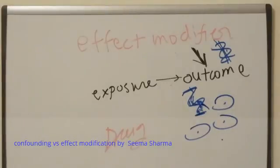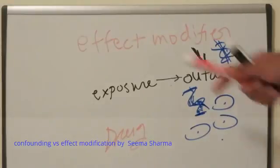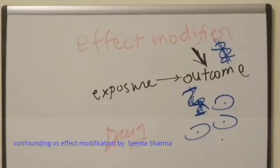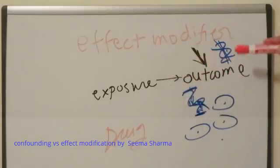The basic difference between a confounder and an effect modifier is that a confounder affects both the exposure and the outcome, whereas an effect modifier only affects the outcome. For the most part, a confounding factor is an outside or extraneous factor or habit, whereas an effect modifier is something in your cells or tissues.